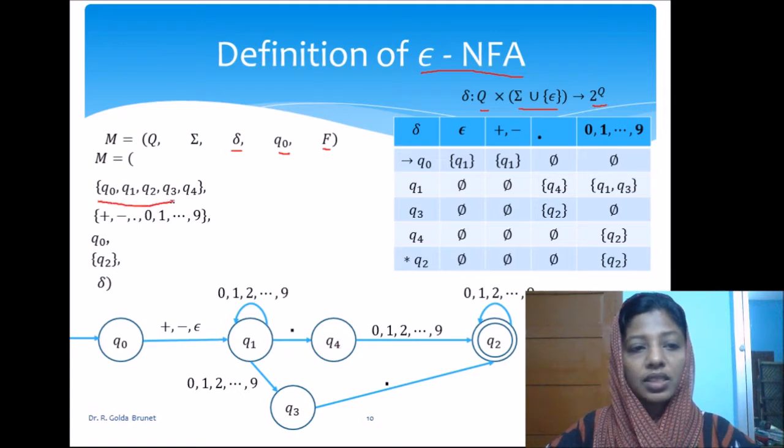This is the set of states which is Q and then sigma will include plus, minus, dot, and symbols from 0 to 9 and see that epsilon is not a member of sigma and the starting state is Q0 and the final state is Q2.